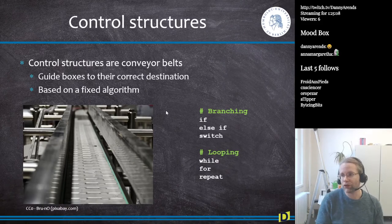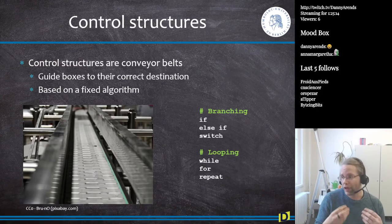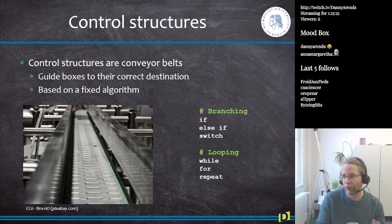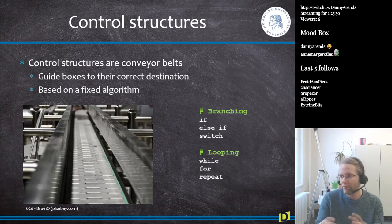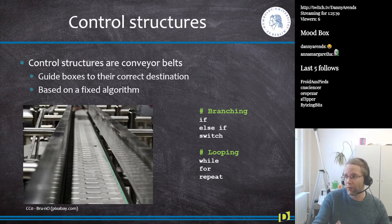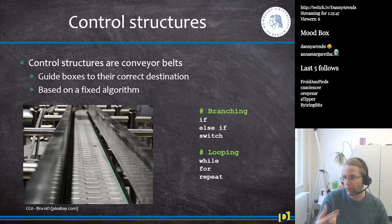The next topic is control structures. Think of a variable as a box — you put stuff in it, and now we want to do stuff with those boxes. Control structures allow us to make decisions, which is called branching: if this, then do that, else do this. We can also have looping — for each element, or for each row or column of a matrix, do something. Control structures are like conveyor belts that guide boxes to their correct destination based on a fixed algorithm.